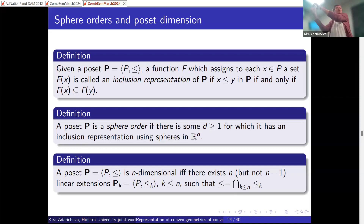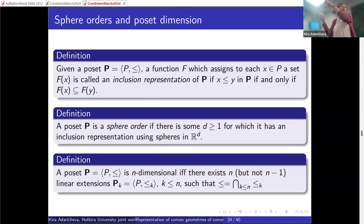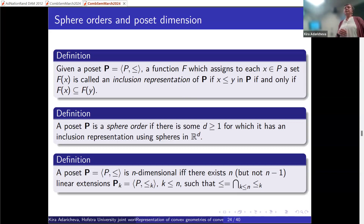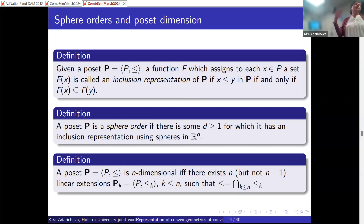In 1989, Brightwell and Winkler generalized this to: is every finite poset a sphere order in some space? A poset is a sphere order if elements can be mapped to spheres in R^d such that x ≤ y in the poset if and only if sphere x is contained in sphere y. The dimension of a poset is the minimal number of linear extensions whose intersection gives the original order.